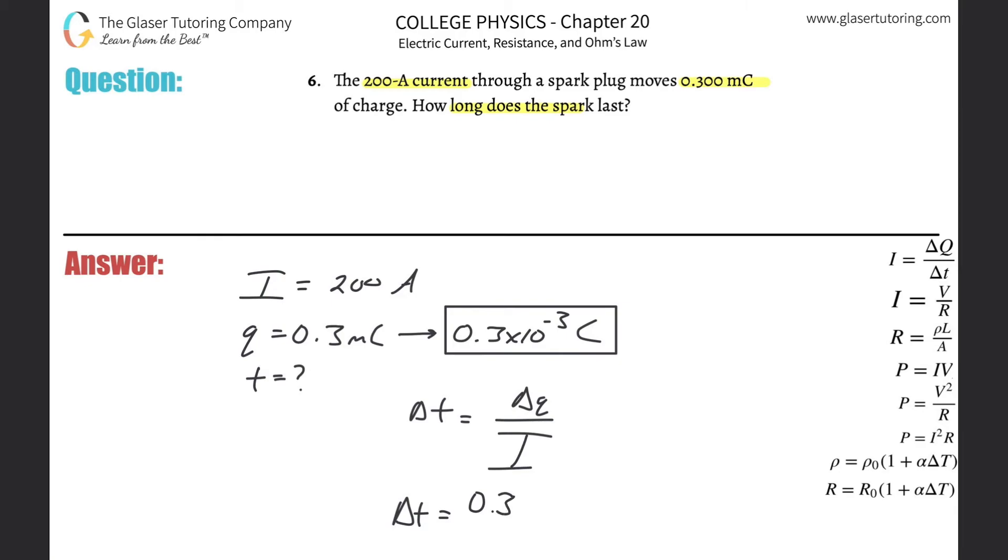So it's 0.3 times 10 to the minus three divided by the current, which is 200. And what do we get? So 0.3 times 10 to the minus three divided by 200. And this works out to be about 1.50 times 10 to the minus six.